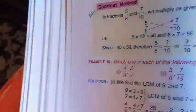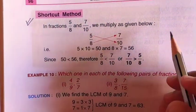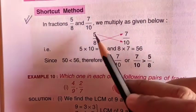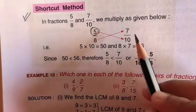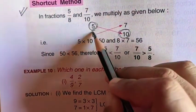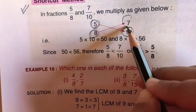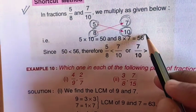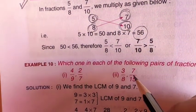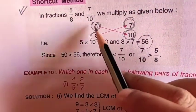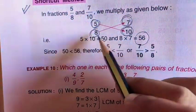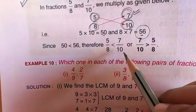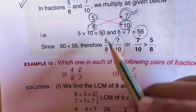Now there is a second process — a shortcut method called corner multiplication. We corner multiply: one fraction's numerator with the other fraction's denominator, and the other fraction's denominator with the other fraction's numerator. 5 into 10 gives us 50, and 8 into 7 gives us 56. The side with the bigger multiplication result contains the bigger fraction, so 7 by 10 is the bigger fraction.